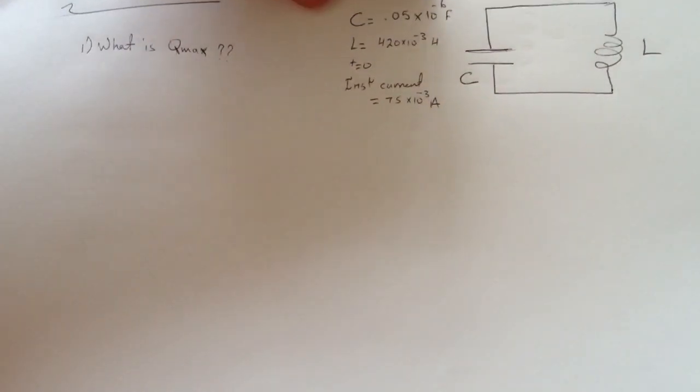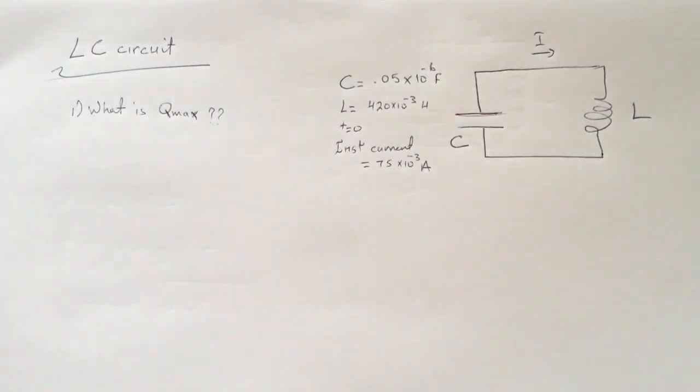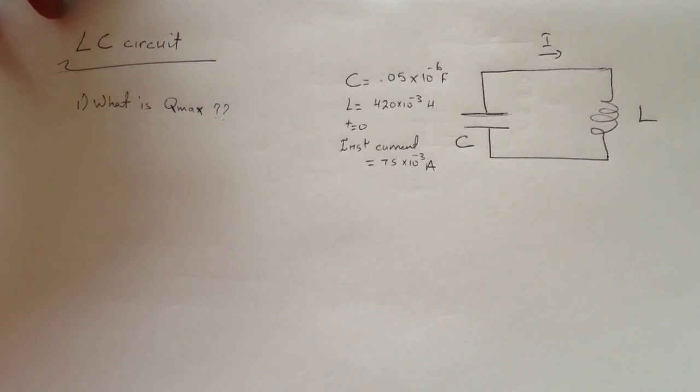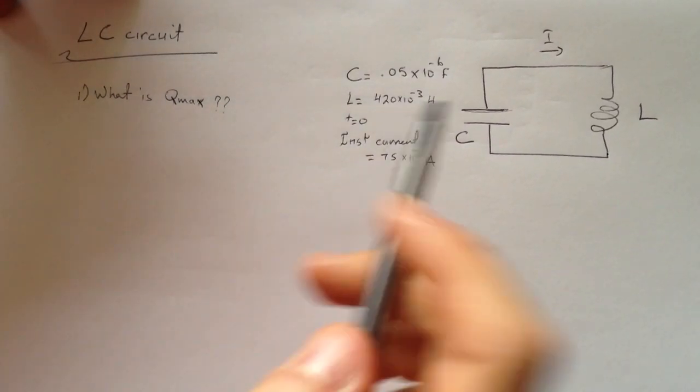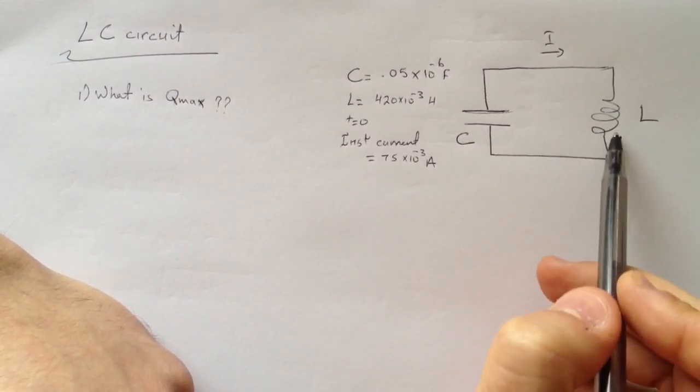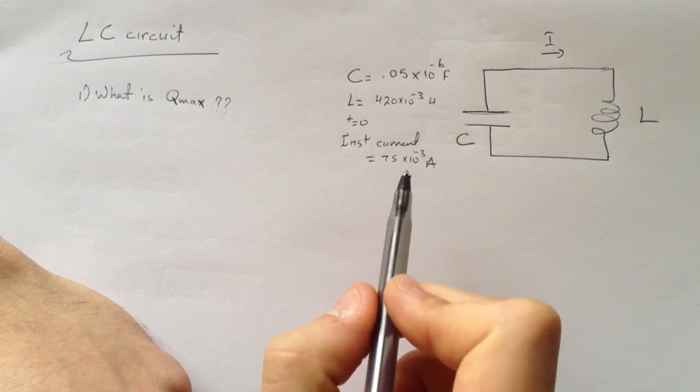Hi guys, this is another tutorial for a smart physics problem, and this one is the LC circuit. It's asking us about what is the Q max on this capacitor. You can see this is a simple circuit that has an inductor and capacitor, and they gave us the information about it.